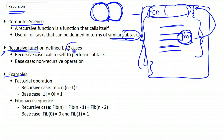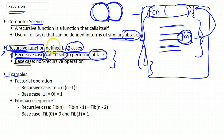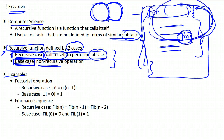A recursive function would have two cases: a recursive case and a base case. The recursive case is essentially where the recursion happens — that is, the call to self. This is where you're calling yourself within your definition. A recursive function is defined by two steps: a recursive step, which calls itself to perform a sub-task. Suppose the task was to divide by 5 — you call that same function but on a sub-task, say divide by 2. Then we have a base case, which is non-recursive. We need a base case because without it, you would keep calling yourself over and over again and be stuck in a loop.